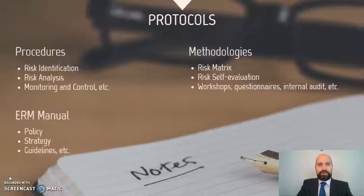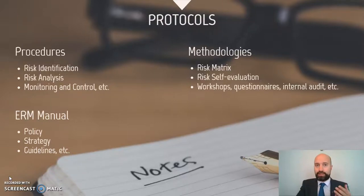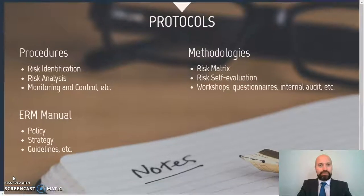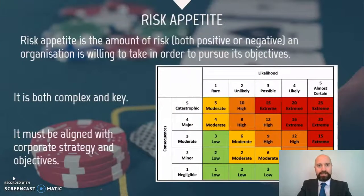The third element within the framework is the protocols. The protocols contain the procedures — how we are going to implement risk identification, risk analysis, risk monitoring and control, etc. Within the protocols we can also find the enterprise risk management manual, containing the whole data and information regarding the standard: the risk management policy, the strategy, the guidelines, etc. And finally we find here the risk management methodologies — for instance, how we are going to implement the risk matrix, the risk self-evaluation protocols, workshops, questionnaires, internal audit and so on. A concept that is fundamental for every enterprise risk management standard is that of risk appetite.